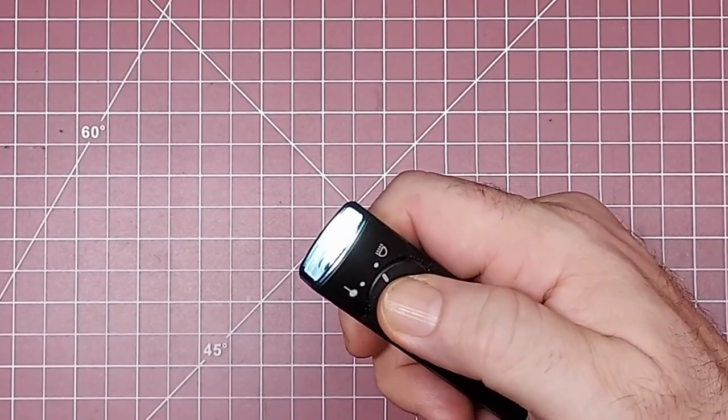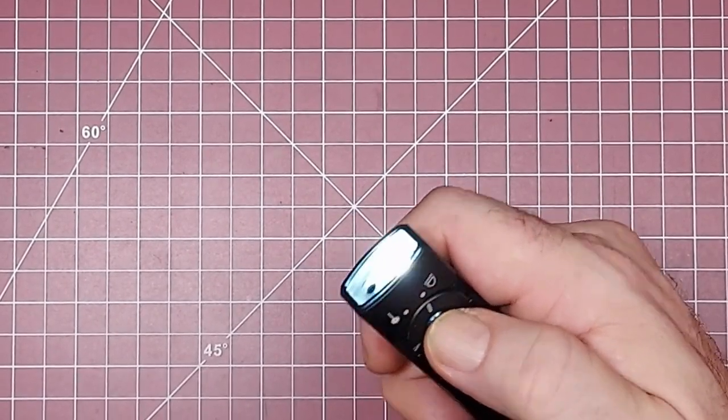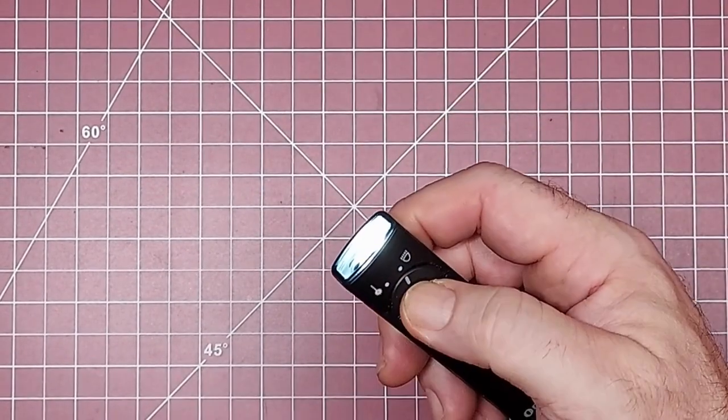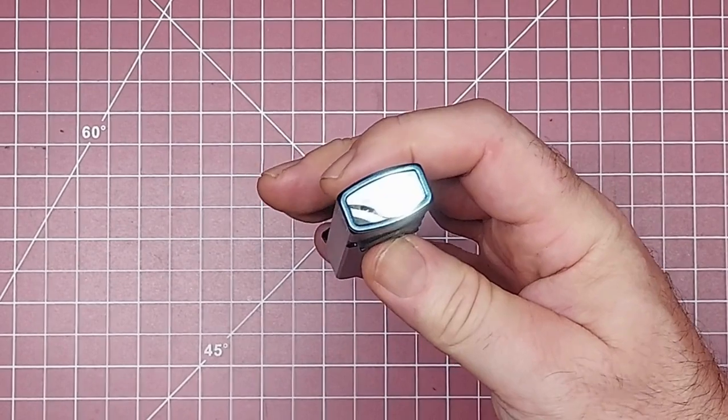Now here's the thing, when you turn it off, turn it back on, it's going to go to the low setting. You won't be able to access that Moonlight setting unless you hold the button down for two seconds again. Then it will activate it.